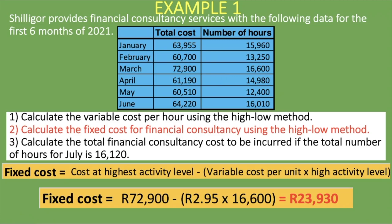This gives us a fixed cost of R23,930. Based on this, we know that for all months from January to June, the fixed cost is R23,930. That is how the high-low method works — it isolates the fixed costs from the variable cost per unit. We know the remaining costs are variable, at R2.95 per hour.